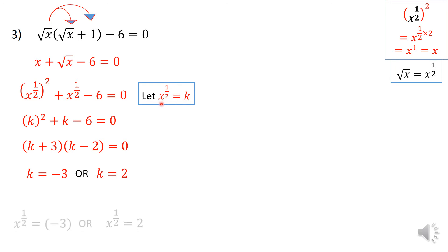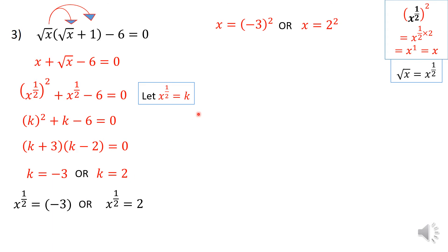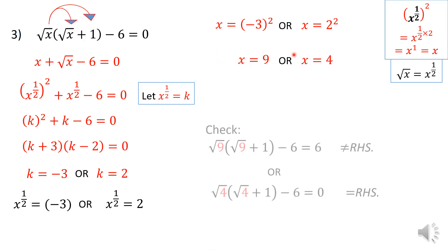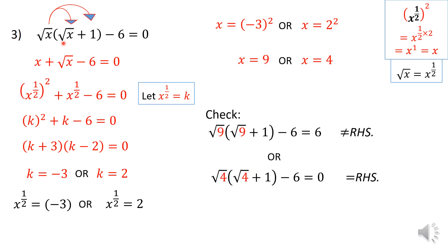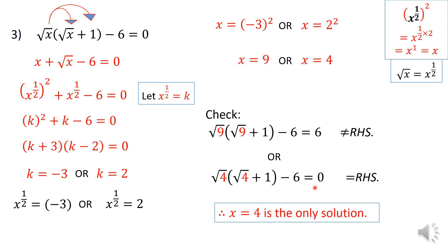Once substituted, I get a quadratic that factorizes as k plus 3 times k minus 2, giving k equals negative 3 or k equals 2. Since k represents x to the power of a half, I square both sides to get x equals 9 or x equals 4. But we must check: substituting x equals 9 gives 6, not 0, so x equals 9 is rejected. Substituting x equals 4 gives 0, so x equals 4 is the only valid solution.